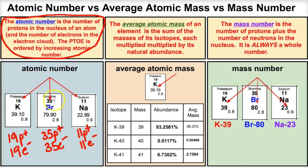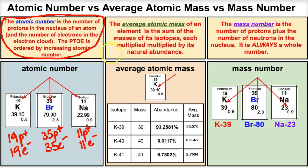The atomic number is the number of protons inside the nucleus of each atom on the periodic table. What makes an element a specific element is its number of protons. For example, 19 protons means potassium, but 20 protons means calcium — a totally different element. The number of protons in the nucleus is what gives each atom its uniqueness.